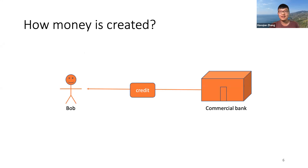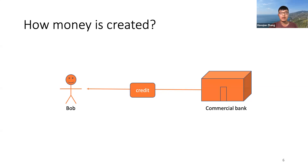So, how is money created? The simplest form includes Bob here, who is a happy man because he can use his credit card to buy a coffee every day and apply for a mortgage for his future house from his commercial bank. In both cases, the money is created by the commercial bank from thin air.